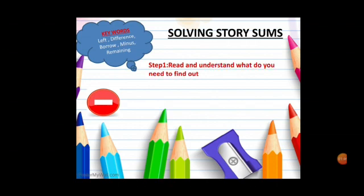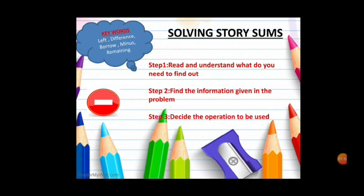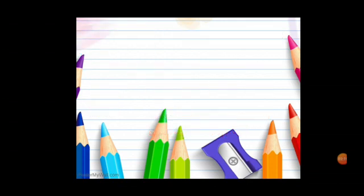Read and understand what do you need to find out. For this you have to read the story sum very well. Step 2, find the information given in the problem. This will help you in making statements. Step 3, decide the operation to be used. You need to find out whether you have to do addition, subtraction, multiplication or division. And finally, solve the problem.